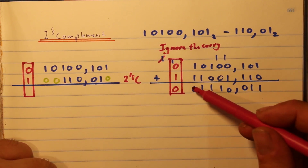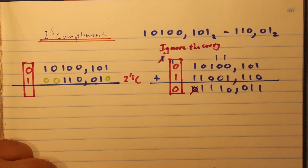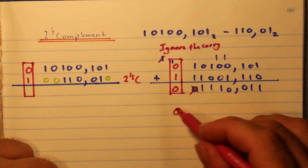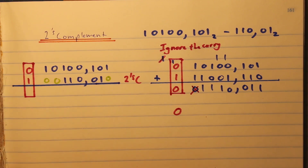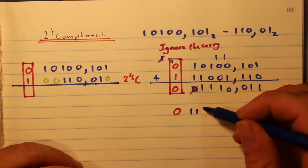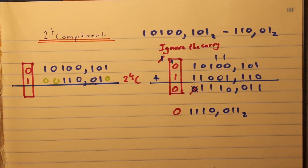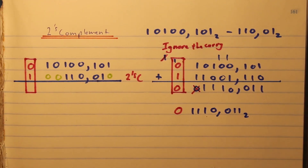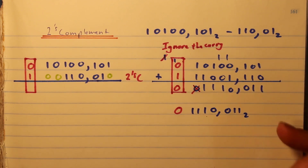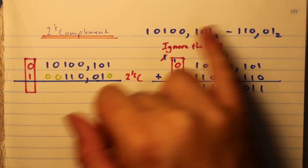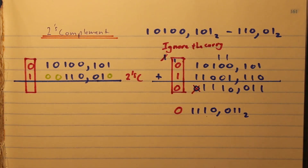So this is our final answer. We clean up the number by crossing out the leading zero. The sign bit zero stays, and then the answer is one, one, one, zero, zero, one, one, two. That is how we do it, and you're going to be asked to convert that number into another number system. In the next video, we'll look at the case where the number in front is smaller than the number at the back, and we'll get a negative answer.